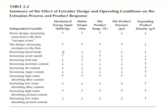So this is a comparison — a summary of the effect of extruder designs. We have seen the screw design, die design, and barrel temperature. For screw design: if we increase restriction, there will be more mechanical energy input required, motor torque will increase, product temperature will increase, die pressure will decrease, and product expansion will also decrease.